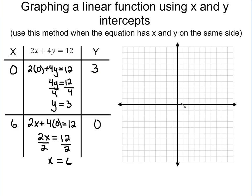So what we're going to do is we're going to graph those two points. So I go 0, 3, 1, 2, 3, put a point right there. And this one I put 6, 0, so 1, 2, 3, 4, 5, 6.